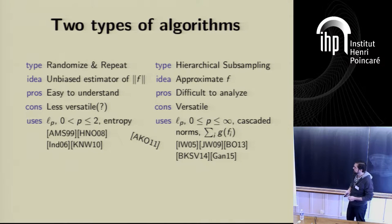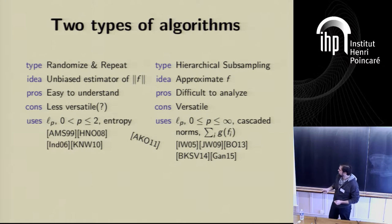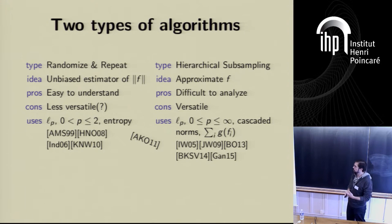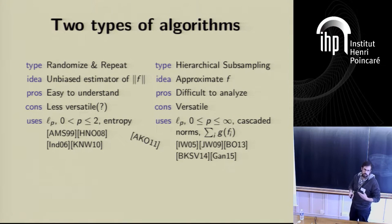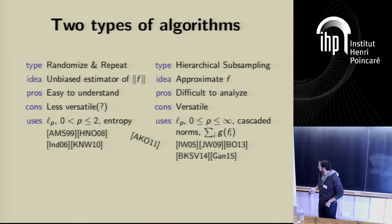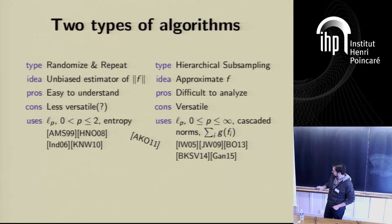This strategy doesn't seem to work everywhere. In 2005, for the large frequency moments, Indyk and Woodruff developed a hierarchical subsampling type algorithm. The idea is instead of cooking up an unbiased estimator, we try to estimate the entire vector, come up with an approximation for the entire vector, and then use that approximation to approximate the value of the sum at the end. This seems to be much more versatile. It has worked for a lot of problems: LP norms, cascaded norms, this kind of generic sum problem, and there's a lot more work.